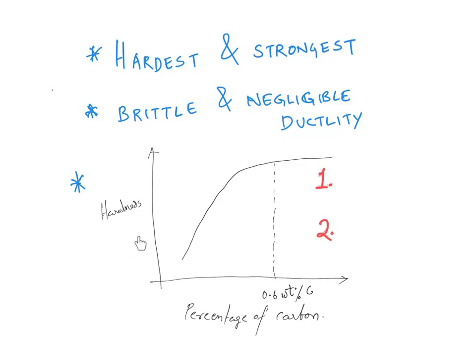Hardness will increase up to a certain percentage — up to about 0.6 weight percentage of carbon. If you add more and more carbon, hardness will increase till this particular point, then it more or less remains the same. Here, hardness is not dependent on microstructure — it is dependent on two other things. The first one is the effectiveness of the interstitial carbon atoms in acting as a barrier against dislocation motion. How effective they are in preventing dislocation motion will determine the hardness.